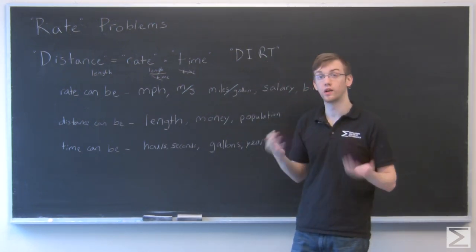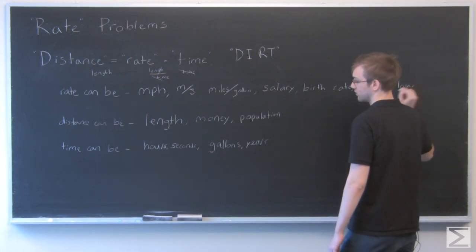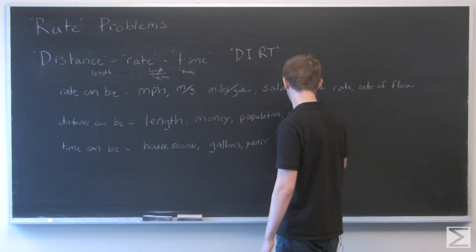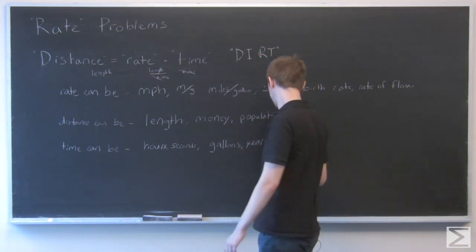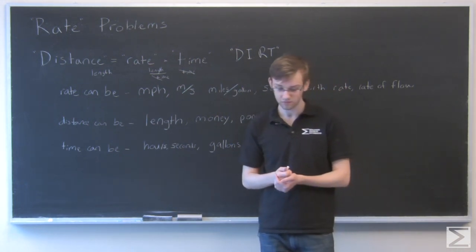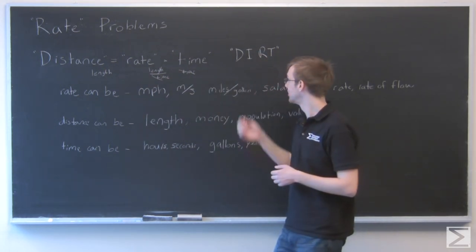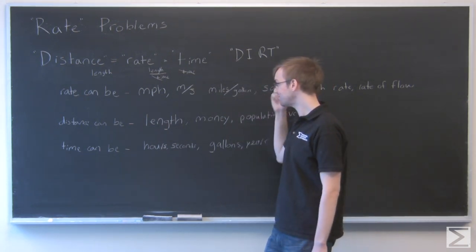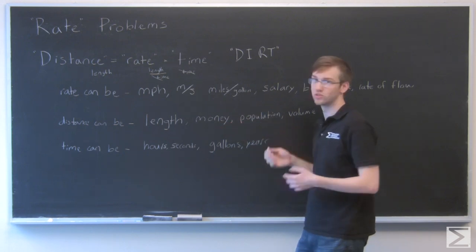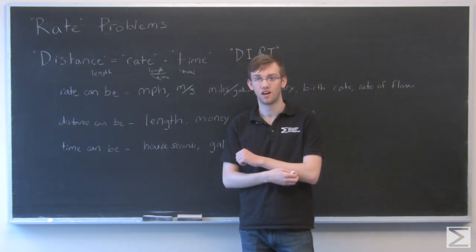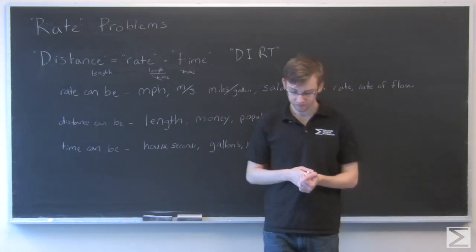You can also have something like a rate of flow where your distance is going to be a certain volume, and your rate is the volume that passes through like an opening in a certain amount of time. So again, saying distance equals rate times time, that's the easiest way to remember the relationship between these three quantities because of DIRT. But distance and time can be all sorts of different things. A lot of them have nothing to do with distance. Money and volume we certainly don't think of as distance quantities, but in terms of rate problems, it's the amount that we're trying to get to, and rate describes how fast we get there.